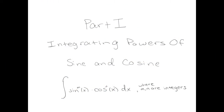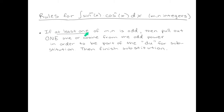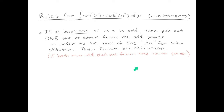In the first part we're going to learn how to integrate powers of sine and cosine — sine raised to the m power and cosine raised to the n power, multiplied together, where m and n are integers. We'll have different strategies based on whether m and n are even or odd. The first rule is that if at least one of m or n is odd, we take one of that odd power out — say if it was sine cubed, you'd write it as sine squared times sine — pulling one out to be part of the du, then finish the substitution.